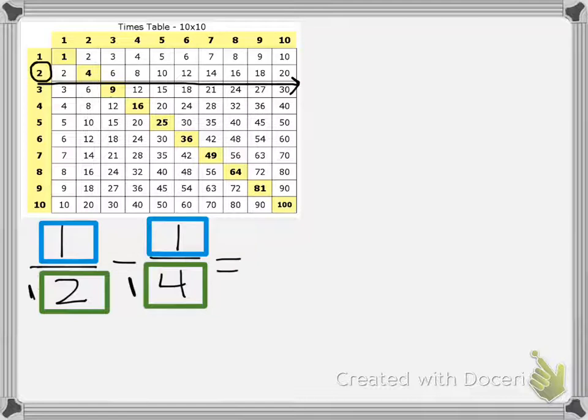Then I'm going to look down here to four, and I'm going to start looking for numbers that two has in common with four. I don't have to go very far to see that they both share a four.